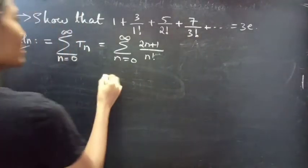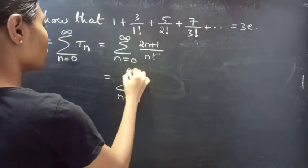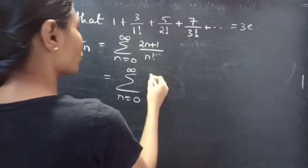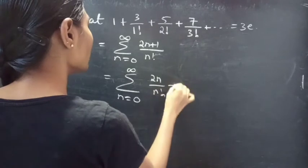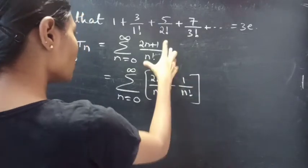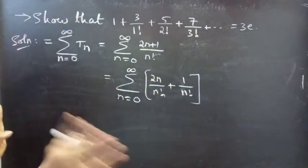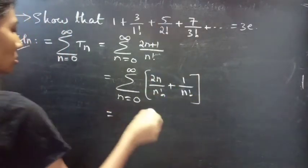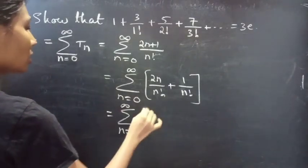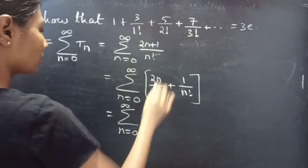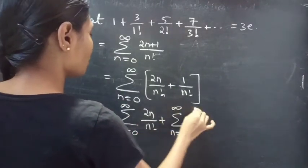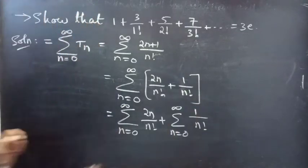You can write this as summation from n=0 to infinity of (2n+1)/n!. Since the numerator has two terms and the denominator has one term, you can split the fraction: this equals summation n=0 to infinity of 2n/n! plus summation n=0 to infinity of 1/n!.